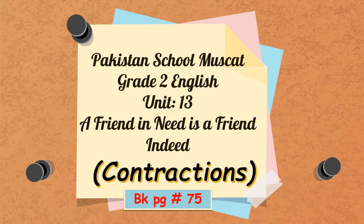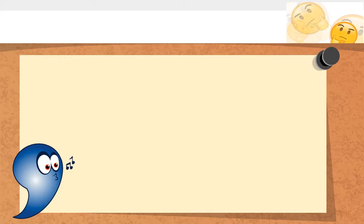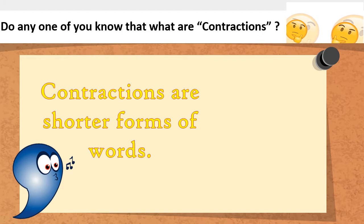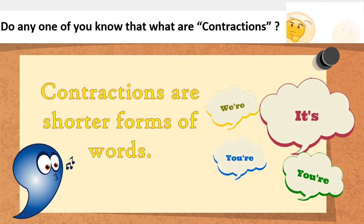So students, before moving on to the questions, we should first recall what are contractions. We have already studied before. Can anyone of you tell me what are contractions? Contractions are shorter form of words. We squeeze the words. For example, we are, it's, you are, you're. How do we do this? How we contract the words? How do we make the word in shorter form?